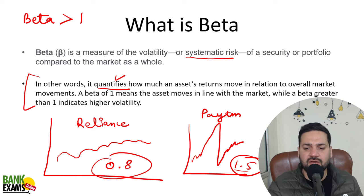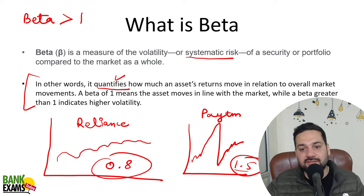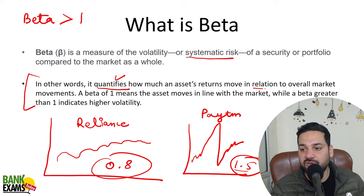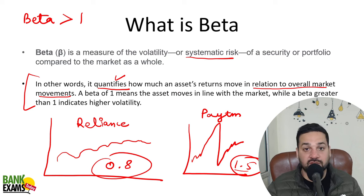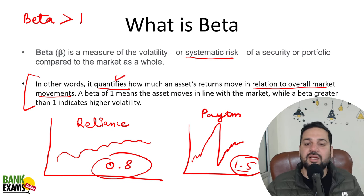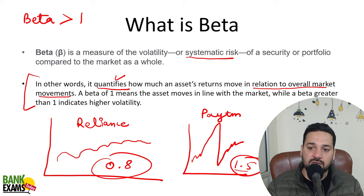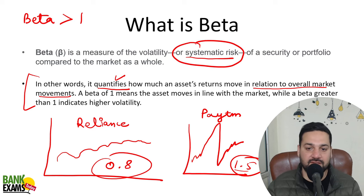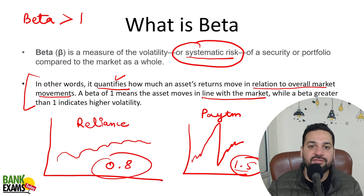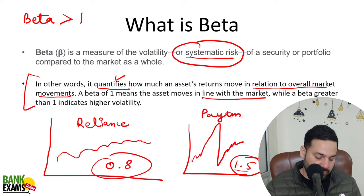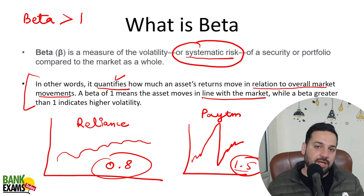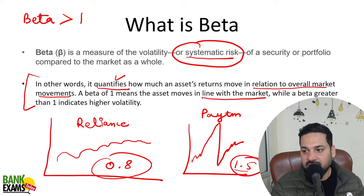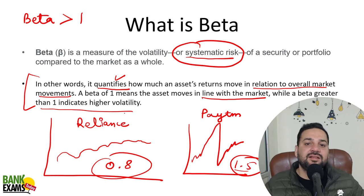Beta quantifies how much an asset's return moves in relation to the overall market movement. When it comes to the stock market, the overall market return is tracked by the Nifty Index, Sensex, or Total Market Index. Beta measures only systematic risk, not unsystematic risk. A beta of one means the asset moves in line with the market — that's essentially the index itself. Beta greater than one indicates higher volatility, and beta less than one indicates lower volatility than the whole market.